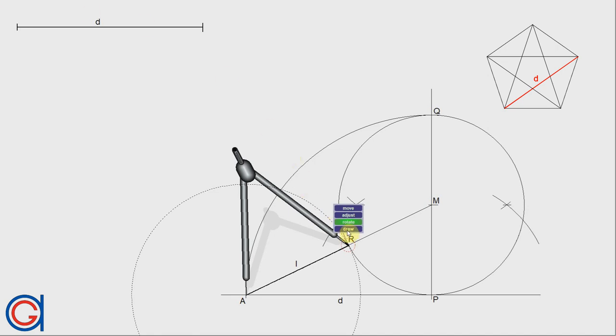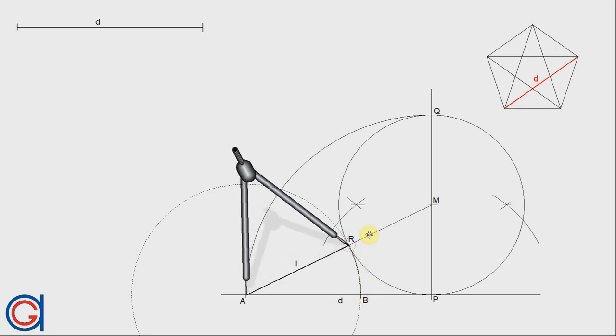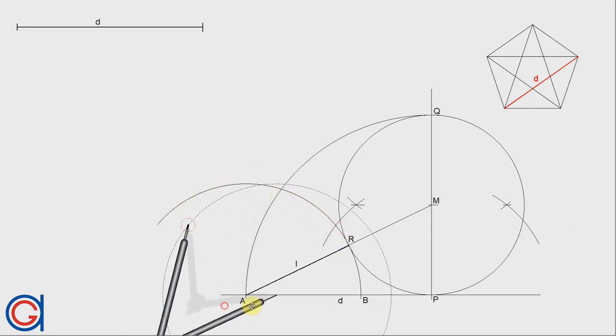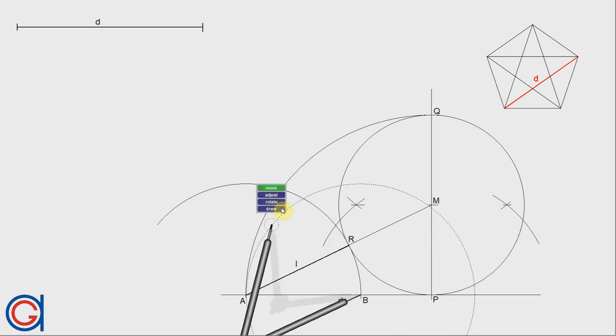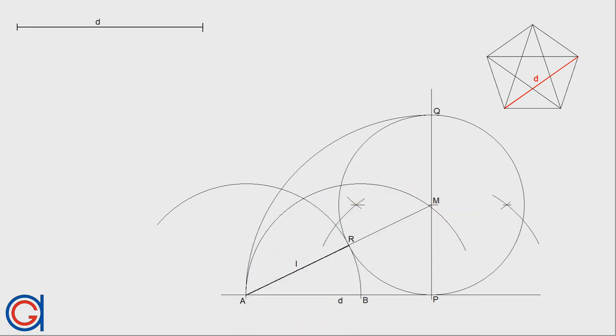Now setting our compass to the length AR and centered on A, we are going to transport this length onto the horizontal line, getting a new vertex B of the star that we want to draw. With the same radius, we are going to elongate the same arc to the left. Now with the same radius but centered on point B, we are going to scribe an arc to the right.